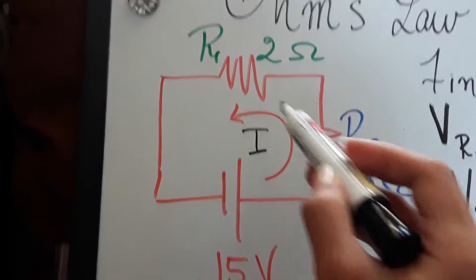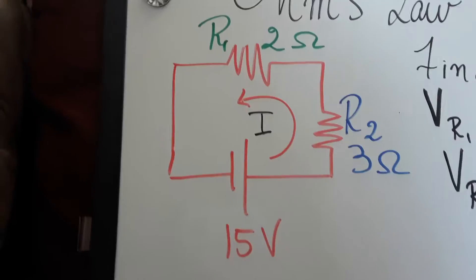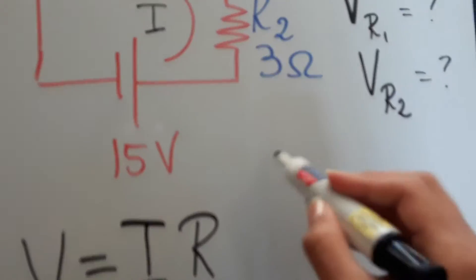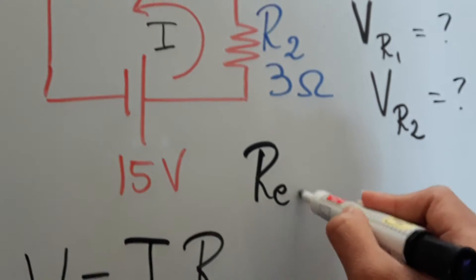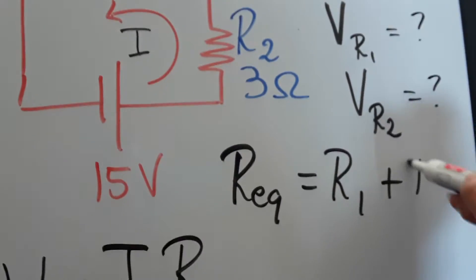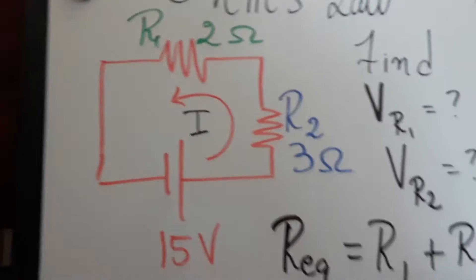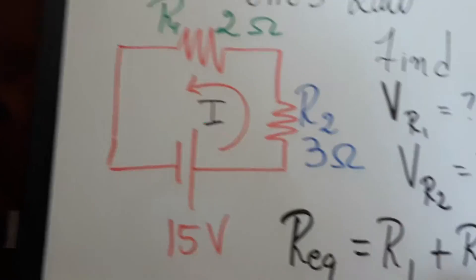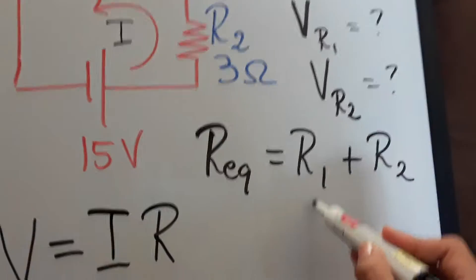And since you have two resistors, you want to find the equivalent resistance. So as we did before, we had R equivalent equals R1 plus R2 in a series circuit. Since we have a series circuit, then we're just going to add those two up.